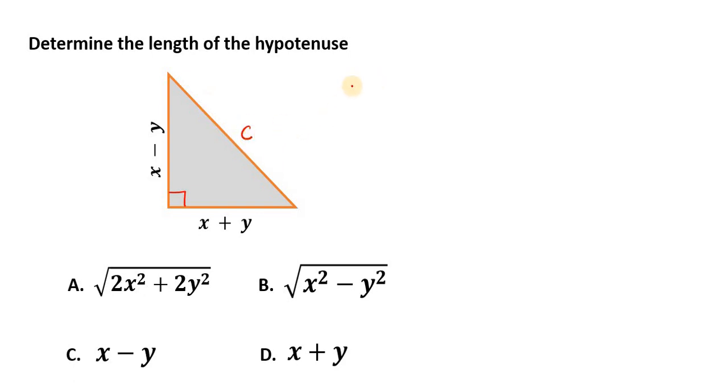Typically, if we want to find the hypotenuse of a right-angled triangle, C is equal to the square root of the other two sides squared and added.